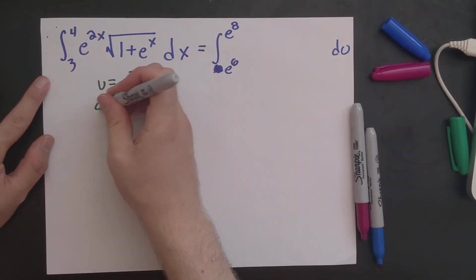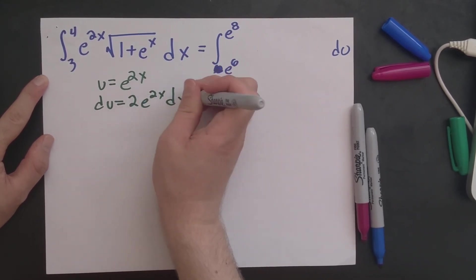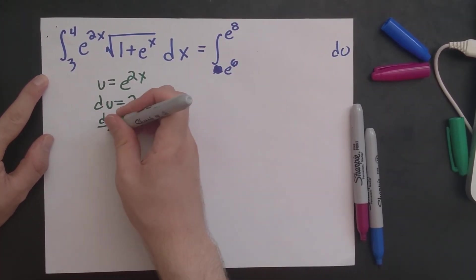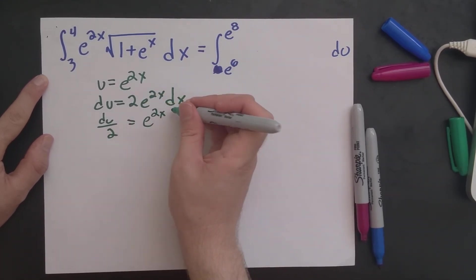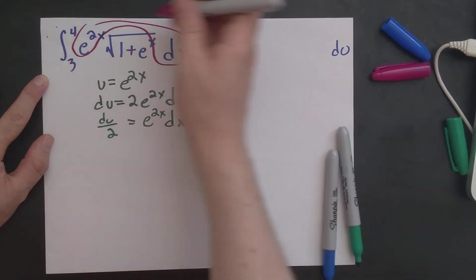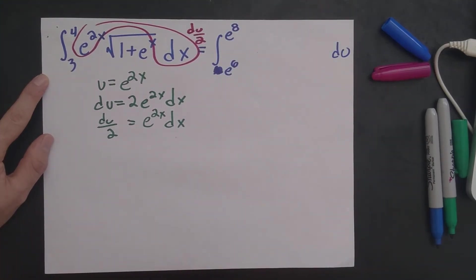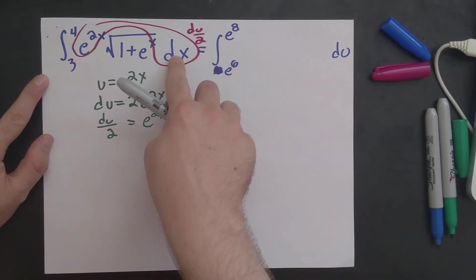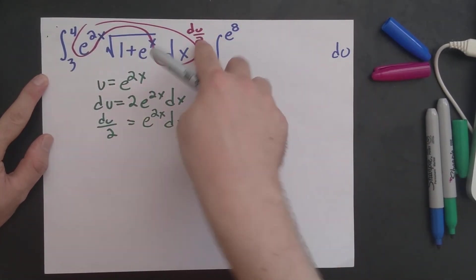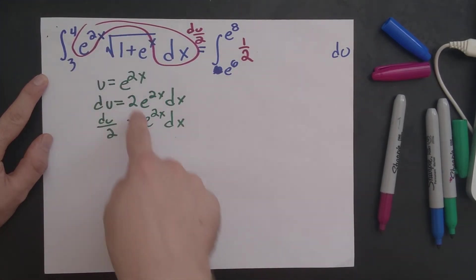Okay, so now we just have to crunch through everything here. du is 2e to the 2x dx. du over 2 is equal to e to the 2x dx. So this right here is du over 2. And what else can we fill in here? So this part here becomes du over 2. So I'll put in 1 half. And so now we just have to figure out what is 1 plus e to the x in terms of u.